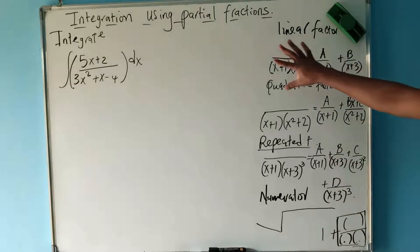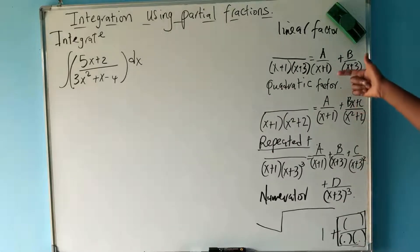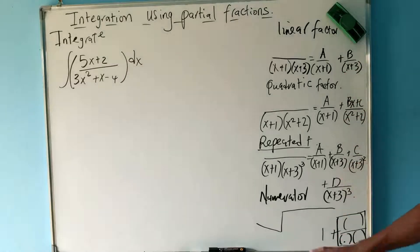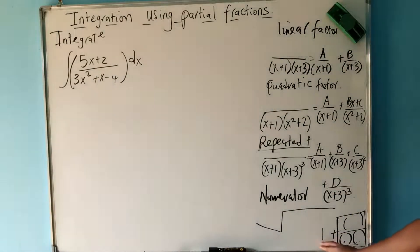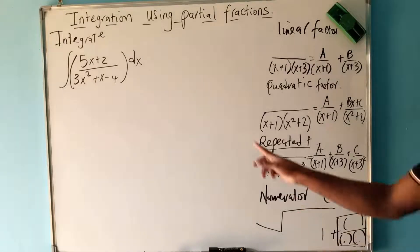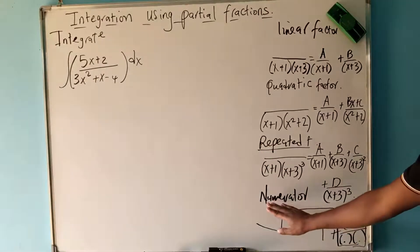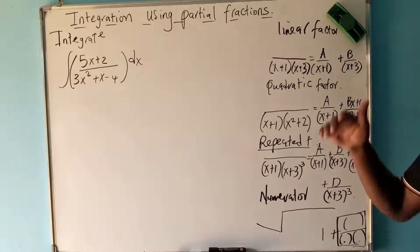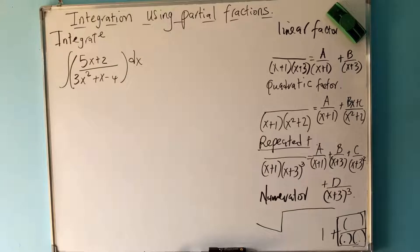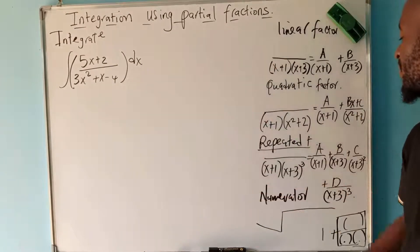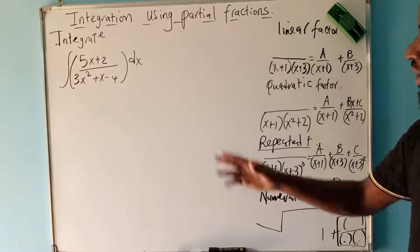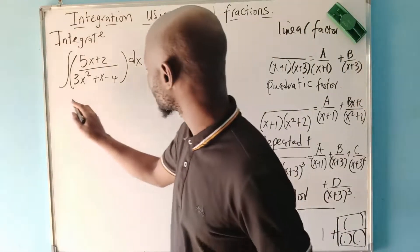So now we need to observe what is happening in the denominator so that we can pick whether the partial fractions will look like the linear, quadratic, or repeated factor form. We are not going to use long division here because the power in the denominator is more than the power in the numerator. So the next thing we need to do is factorize the denominator to see what kind of partial fraction decomposition we end up with.